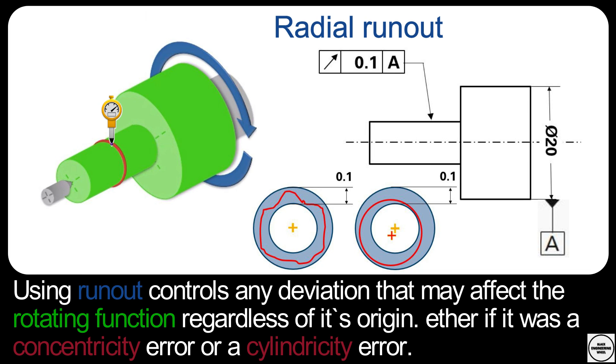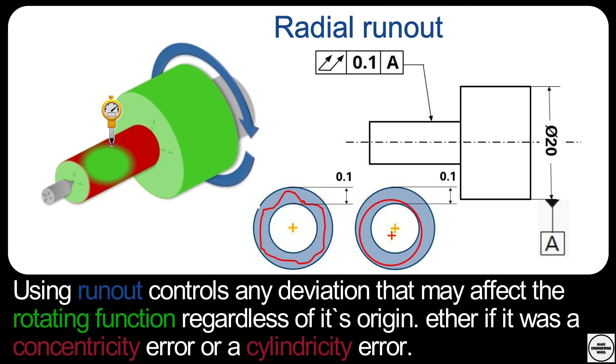But if you use the total runout, which symbol looks like this, two connected arrows instead of one, the measurement has to be done on different cross sections and all the results has to be evaluated as if it was one cross section. So the difference in height is now evaluated between all the points on the whole cylinder, not only on one cross section.